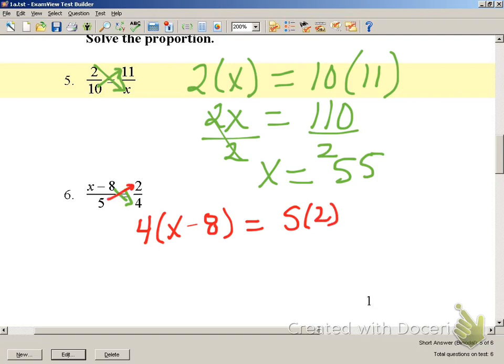Solve the equation. We have to distribute first. So we have 4X minus 32 is equal to 10.